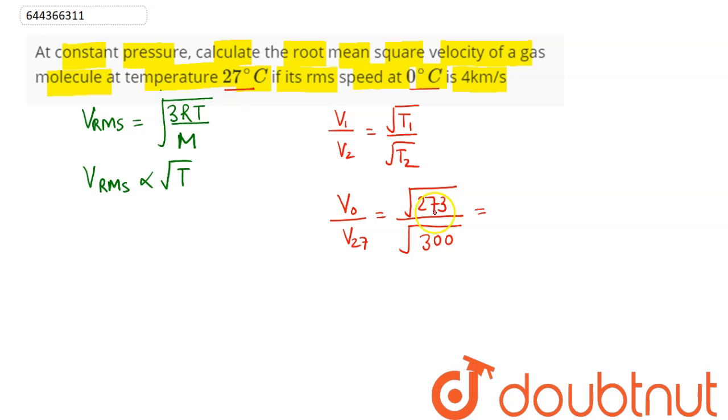On simplification, 3 cancels, 273 becomes 91 divided by denominator becomes 100. So we can say this becomes speed at 0 is 4, so this is equal to 4 divided by speed at 27 equals square root of 91 divided by 10.